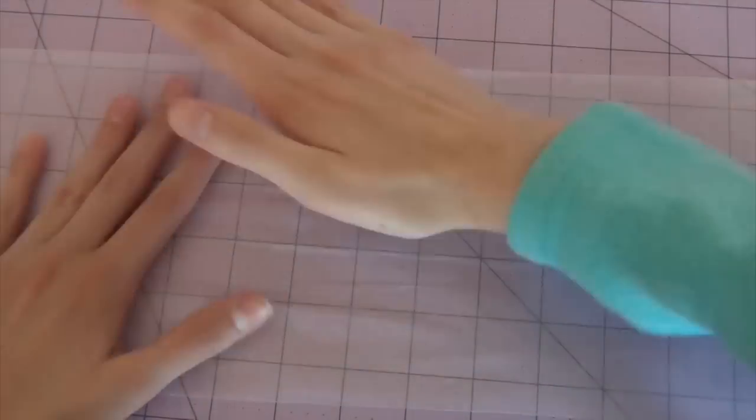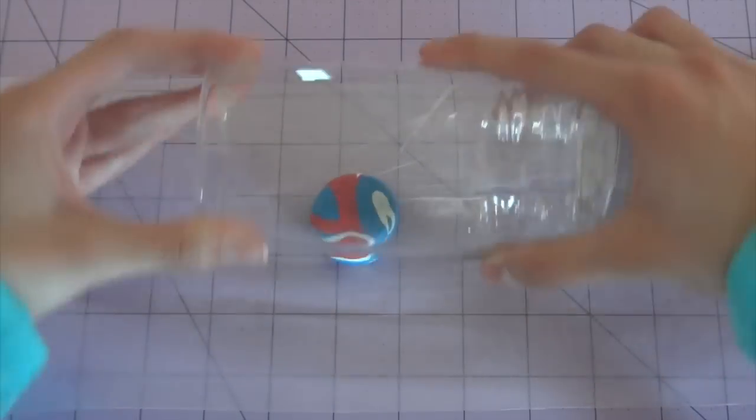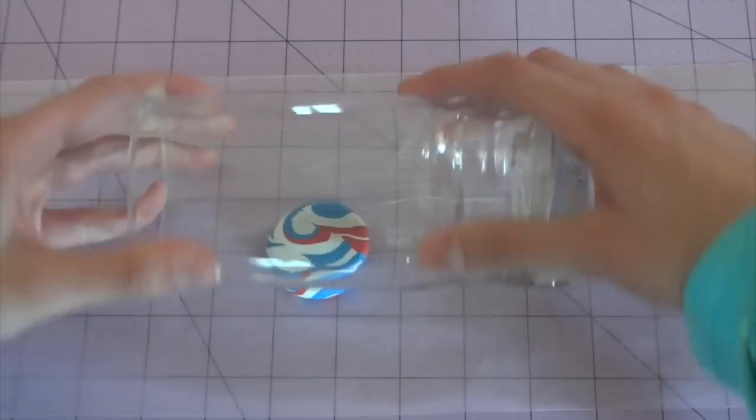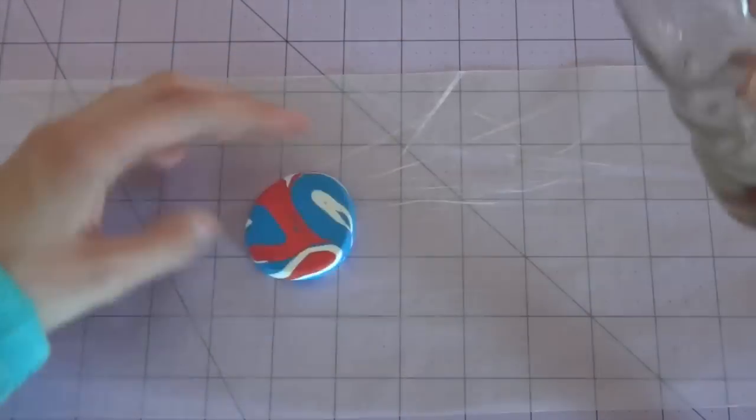When you're done with that, you're going to roll it into kind of a ball shape. Now you're going to use your glass or a rolling pin if you have one and you're just going to flatten out the clay.